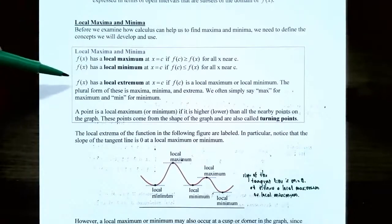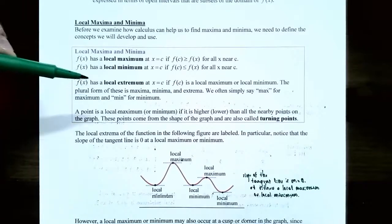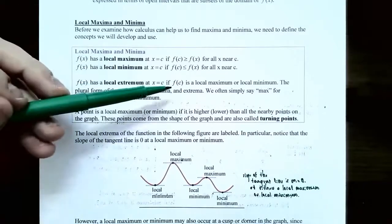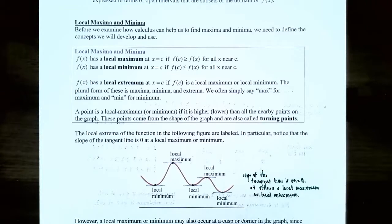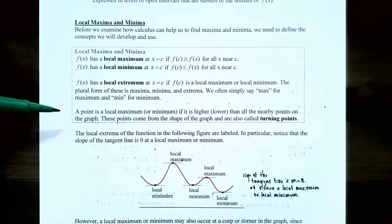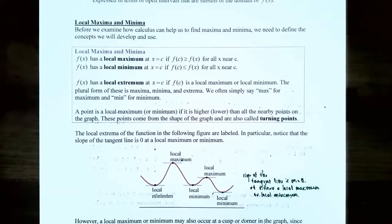f(x) has a local extremum at x = c if f(c) is a local maximum or a local minimum. The plural forms are local maxima, local minima, and local extrema — oftentimes we just say local max or local min. A point is a local maximum or minimum if it's higher or lower than all the other nearby points on the graph. These points come from the shape of the graph and they are called turning points.